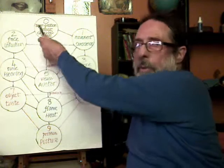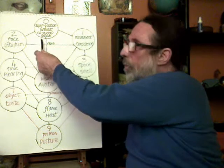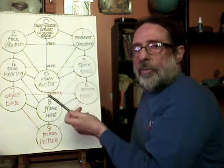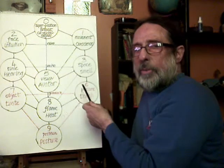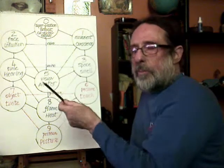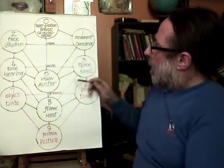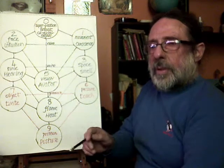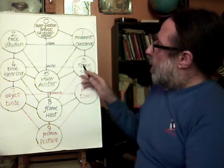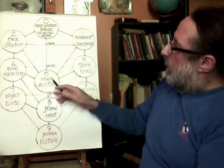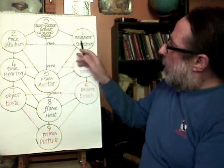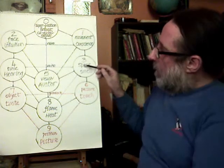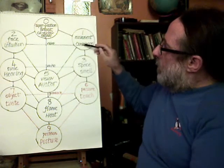From that movement we get the idea of space, of being in different places — that we've moved but we weren't in the place we were before. So from those quantum movements we get a wave form. Remember this is quantum, and from that quantum we get a wave form. Now that wave form — see, it's the endurance.